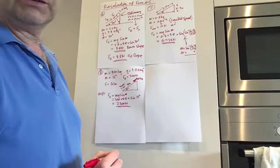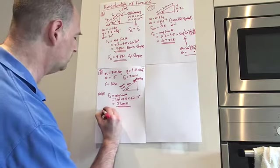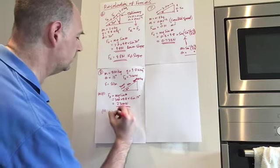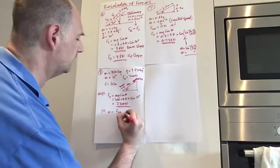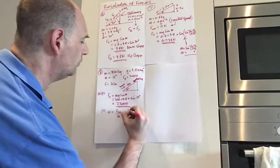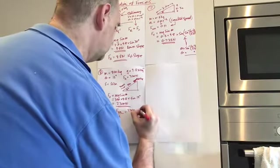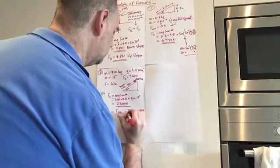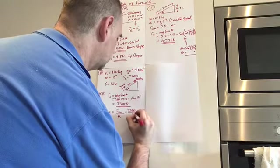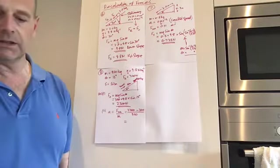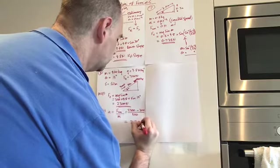Now, having got that, we can work out the acceleration down the slope, which is what part A2 is after. That's going to be the unbalanced force over the mass. That's going to be the 2300 minus 300 over 900 kilograms.